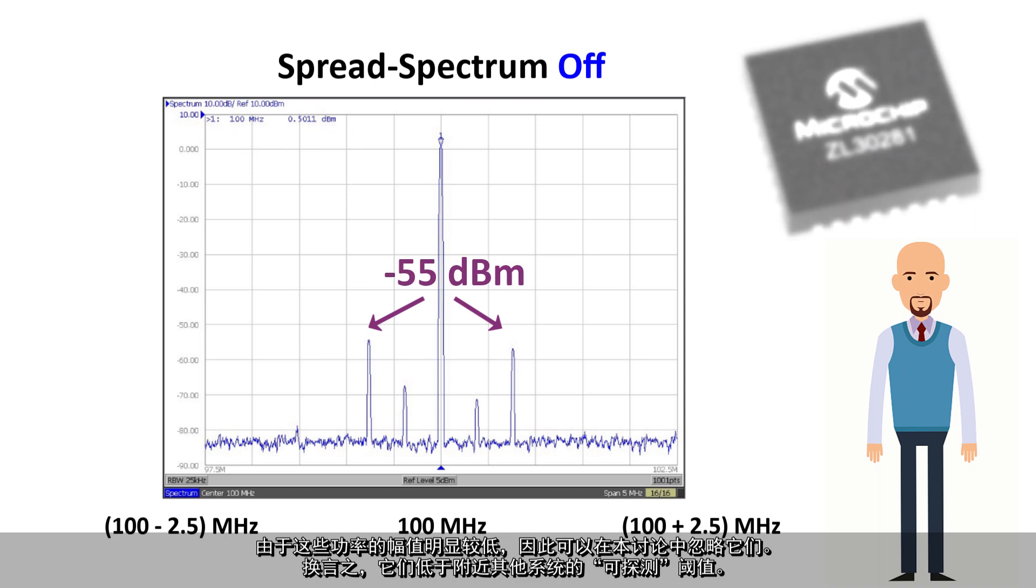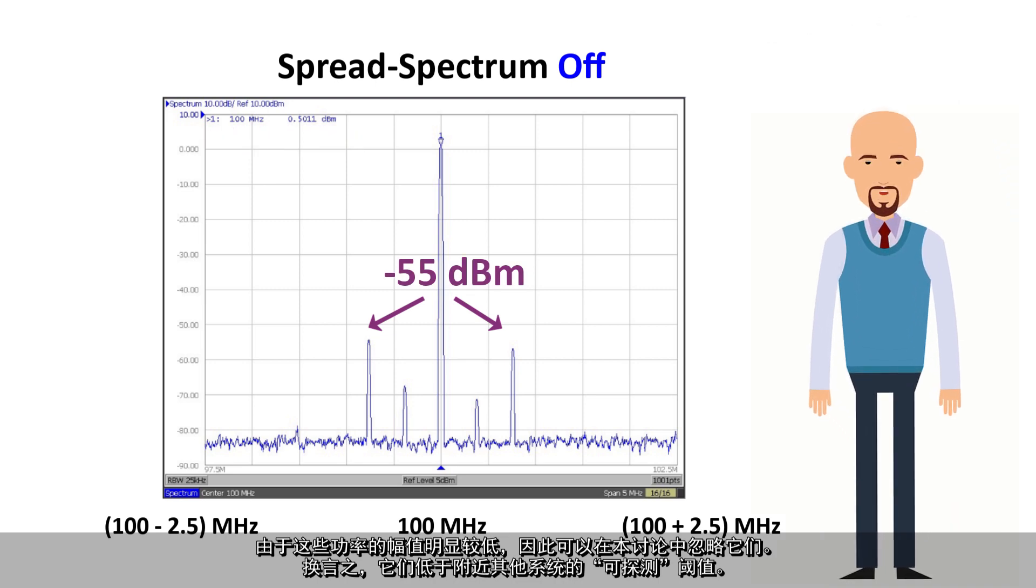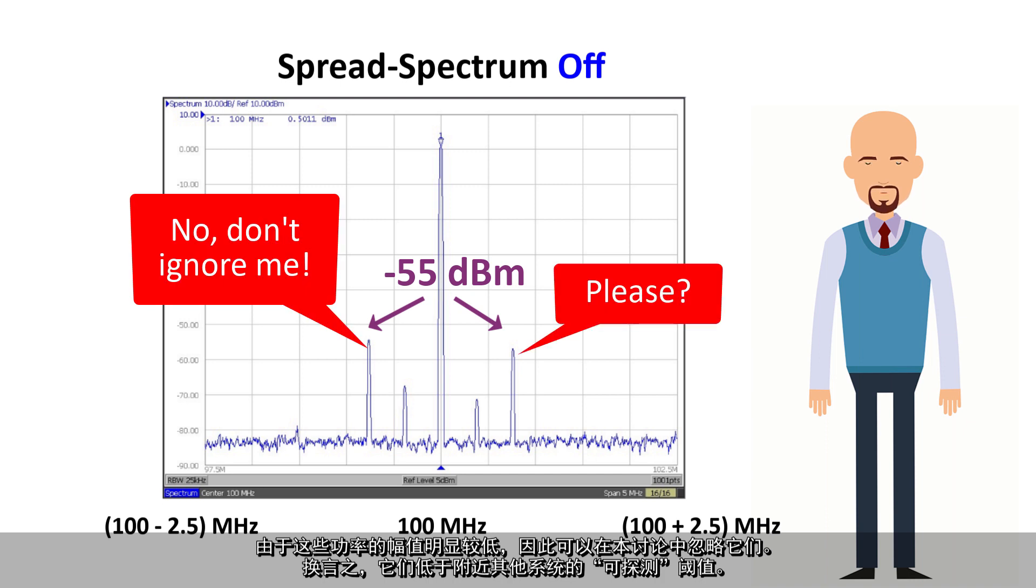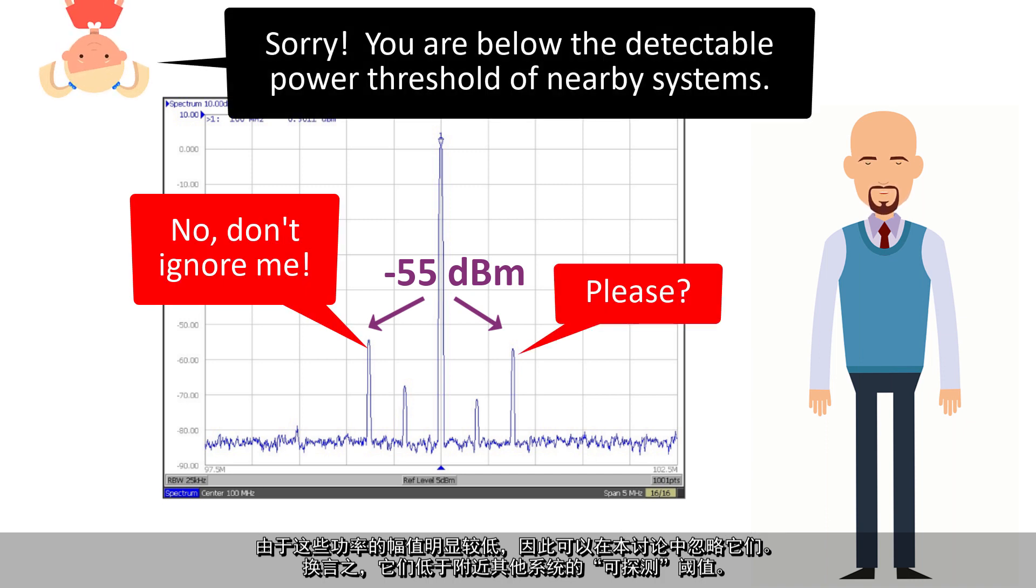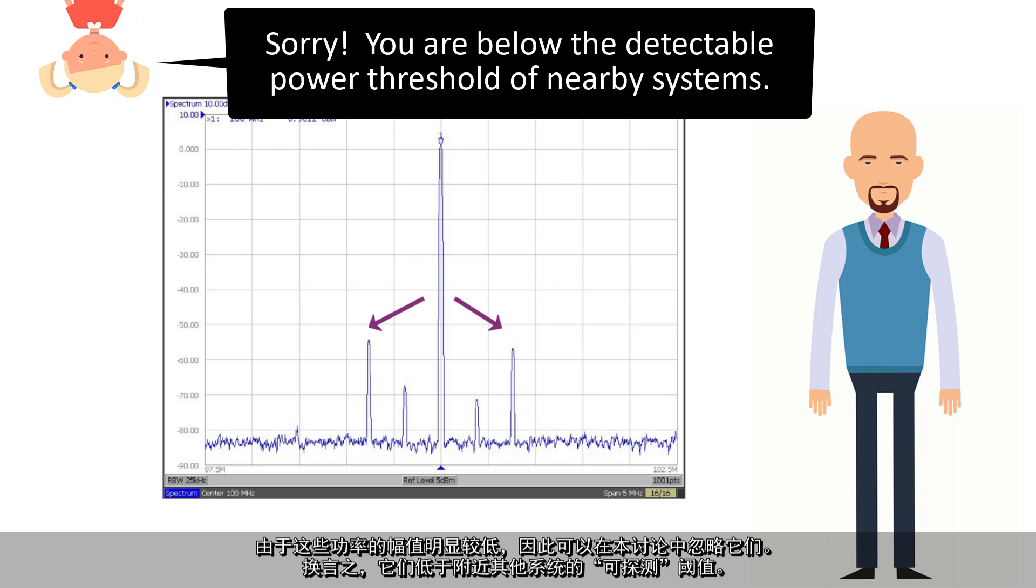Because the amplitudes of these are significantly lower, these smaller power peaks can be ignored for the purposes of this discussion. In other words, they are below the detectable threshold of nearby systems.